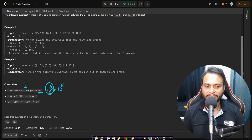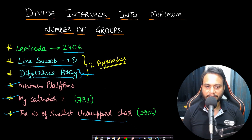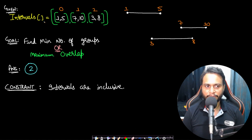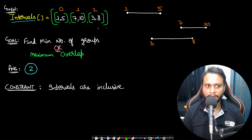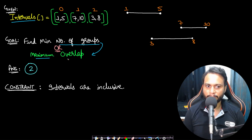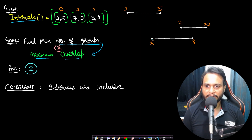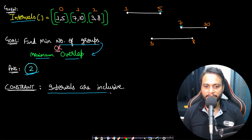Let's look at an example: intervals [1,5], [7,10], and [3,8]. Our goal is to find the minimum number of groups, which we can derive as finding the maximum number of overlaps at any point in time. In this case, [1,5] overlaps with [3,8], and [7,10] overlaps with [3,8], but the maximum overlap at any point in time is 2. So the answer is 2, because all three cannot overlap simultaneously — [7,10] starts after [1,5] ends.